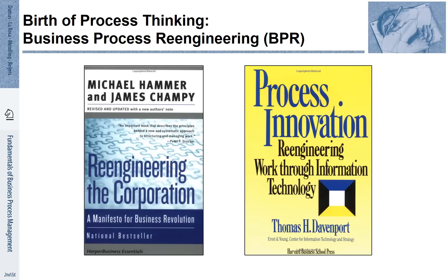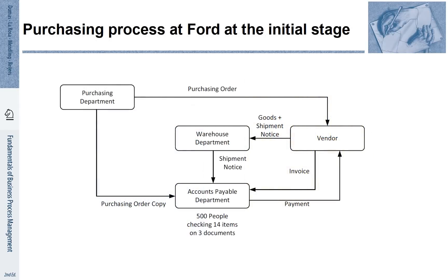These opportunities are described by Hammer and Champy as well as by Davenport in their books. Concepts like business process re-engineering and process innovation capture the essence of these ideas. Let us look at one of the examples that Hammer and Champy describe in their book — they refer to the purchasing process at Ford. The original process at Ford was as follows: when something had to be purchased, the purchasing department was contacted.